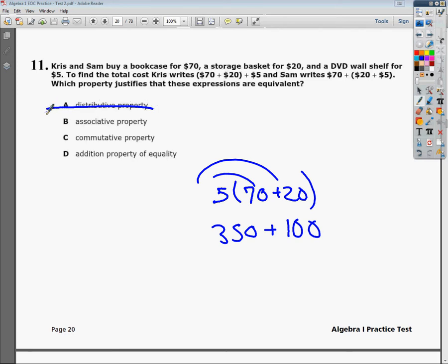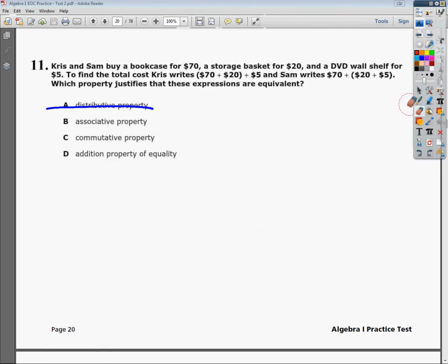Now, another way to describe an association or a group would be an association. So they change the grouping symbols and all the numbers are in the same spot. That's going to be the associative property. So the answer to number 11 is going to be B.